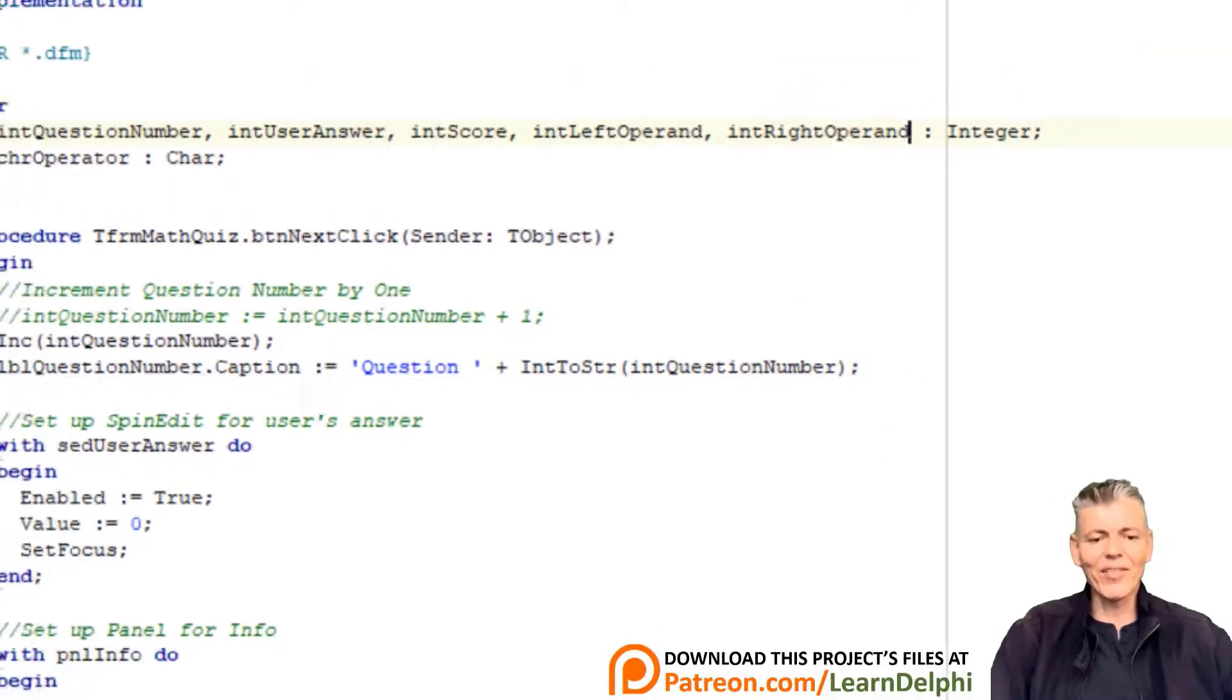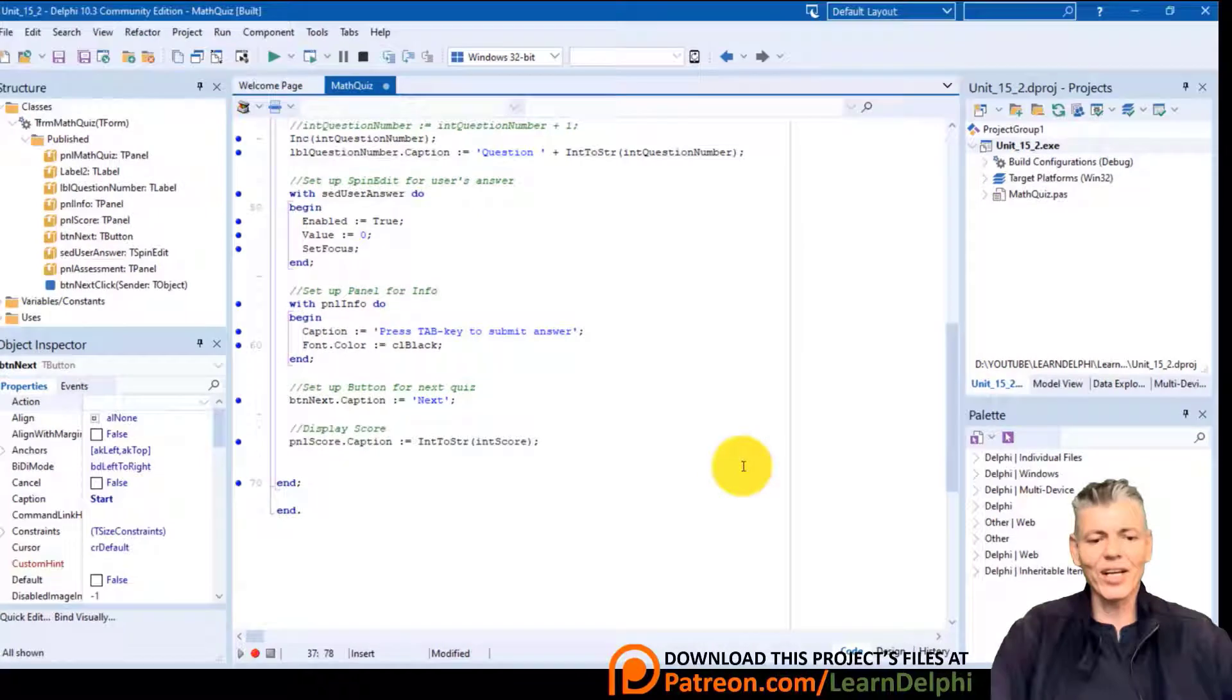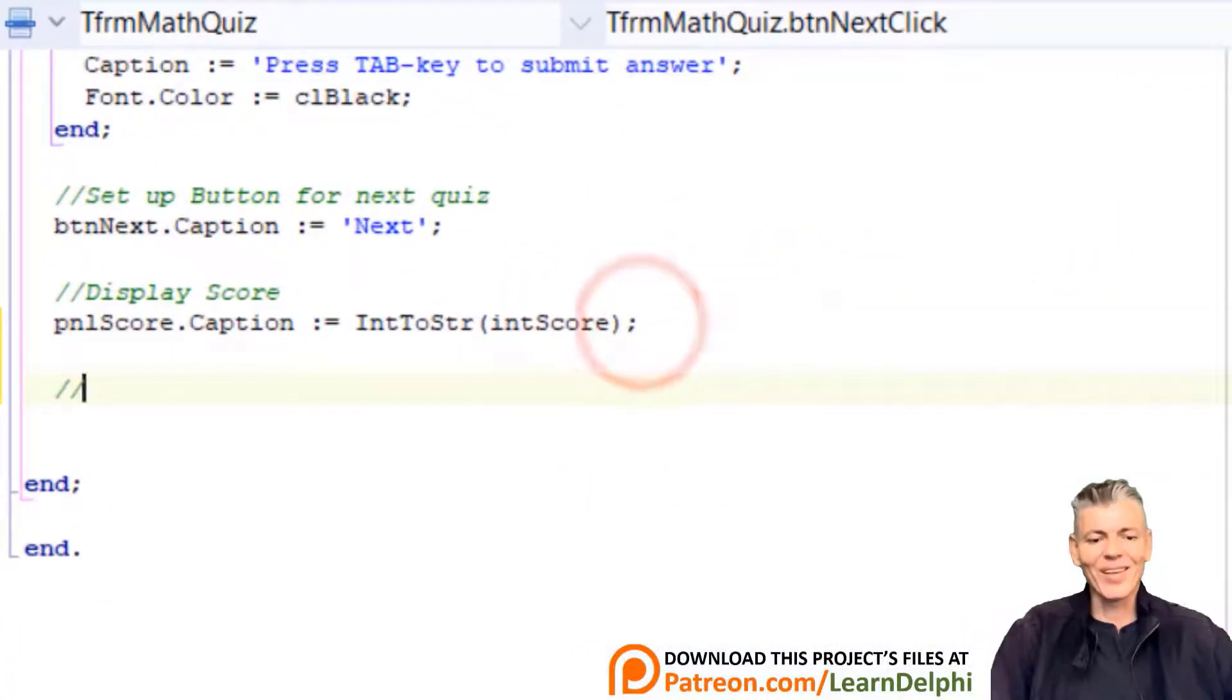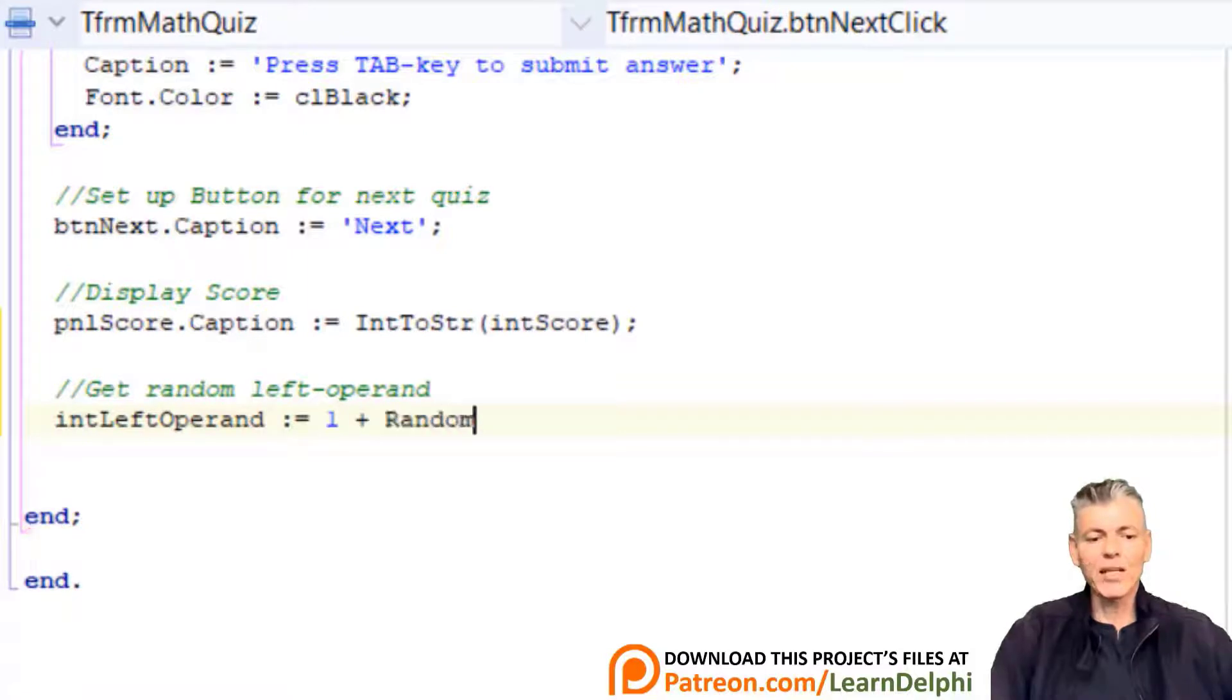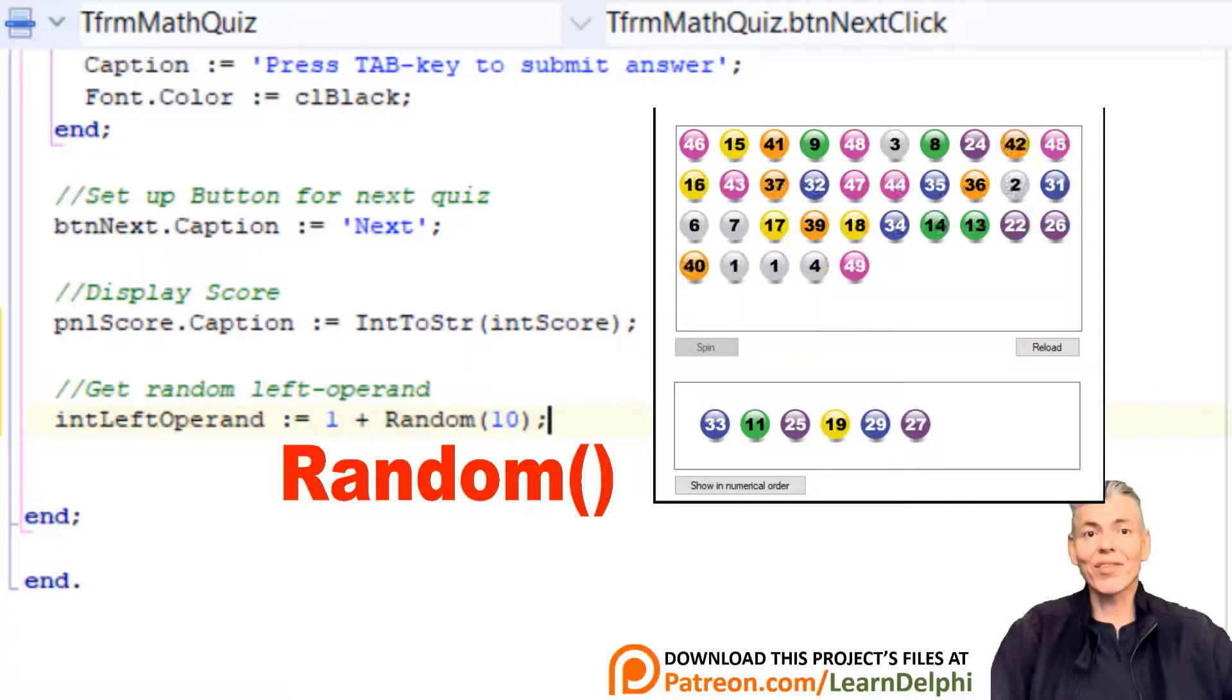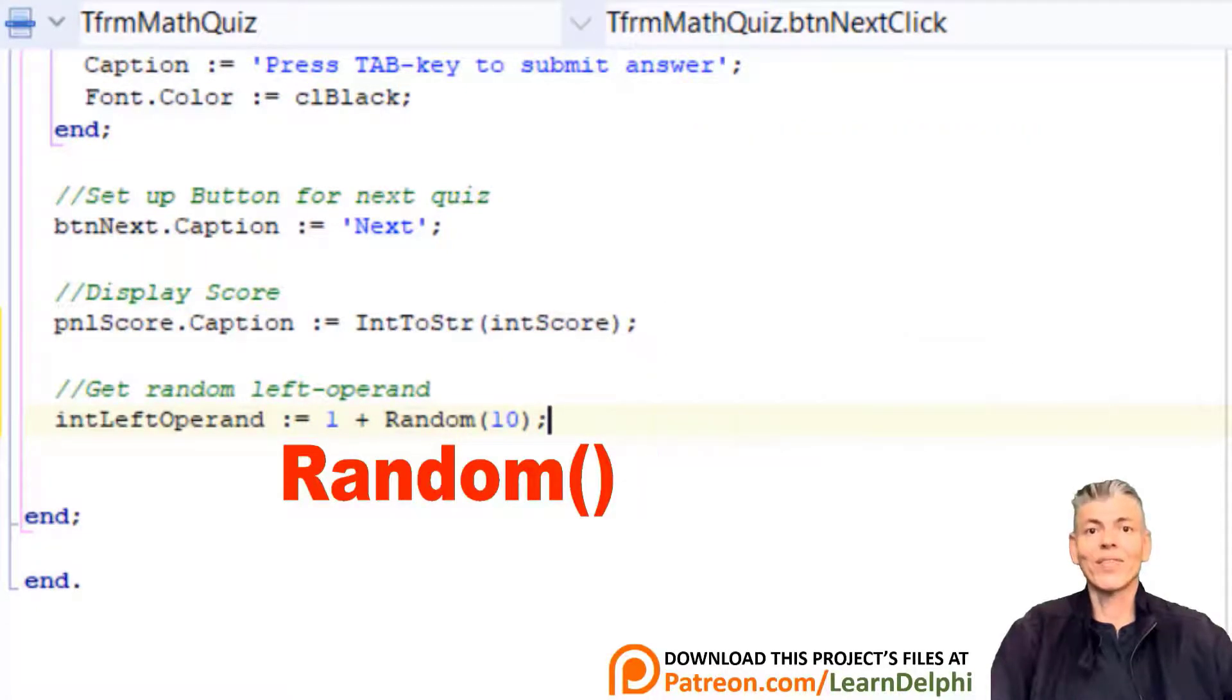Go under the last code in the event handler that handles the button's OnClick event. Make a new line and type this comment: Get random left operand. Press enter and type intLeftOperand := 1 + Random. After random type a 10 between brackets. Random is a default function that can do a lot of stuff. You can use it to randomize numbers, colors, indexes of arrays and so on. The number between brackets is not required.